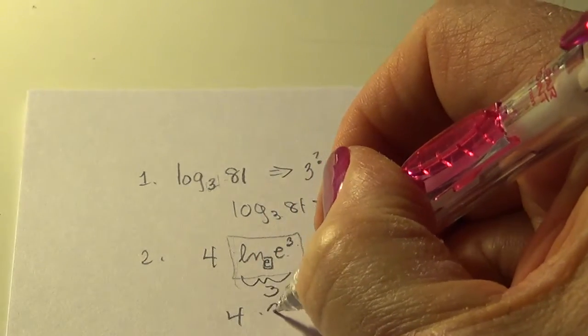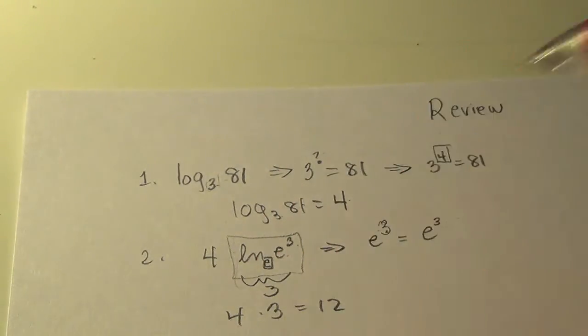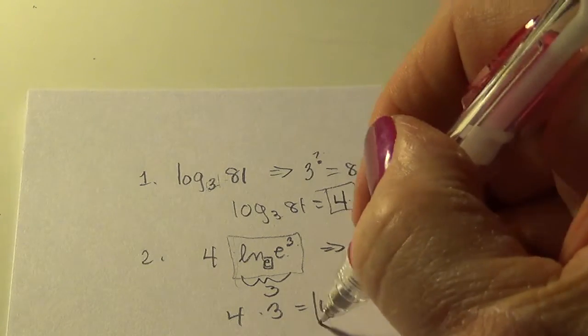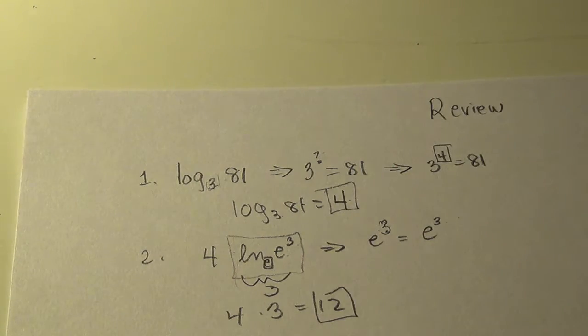So four times three equals 12. Final answer.